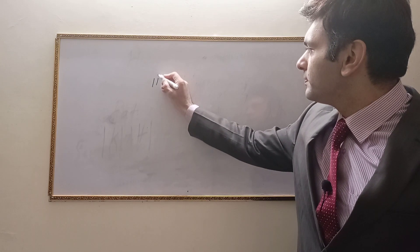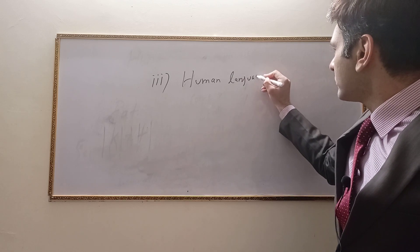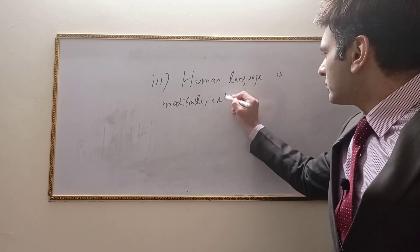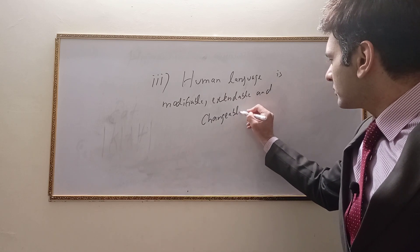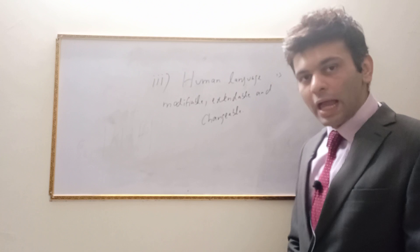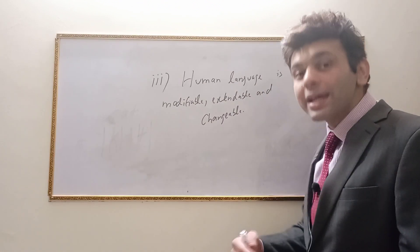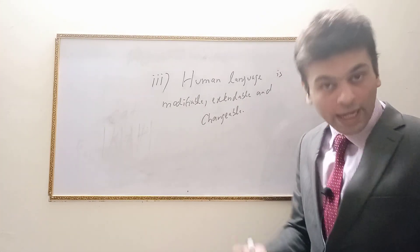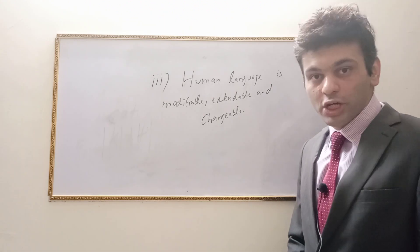The third difference: there are three aspects missing in the animal communication system. In human language, we can go for the modification of language. We can extend its usage and practical applicability, and we can also modify, alter, and amend a language. This is something you may never find in animal communication system, because animal communication system is limited.